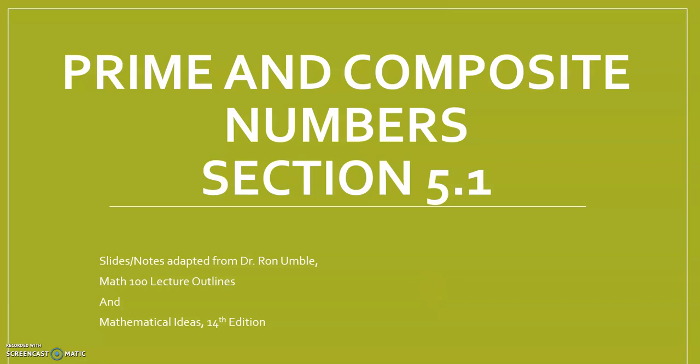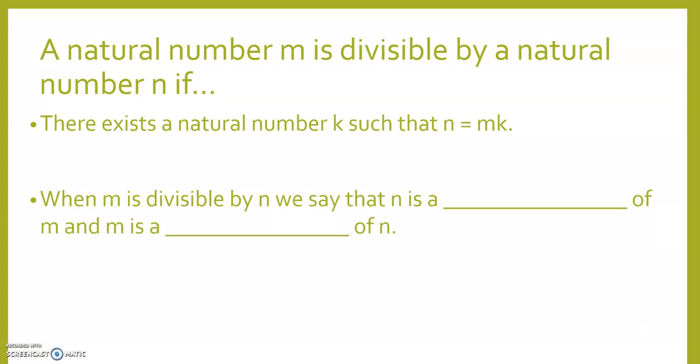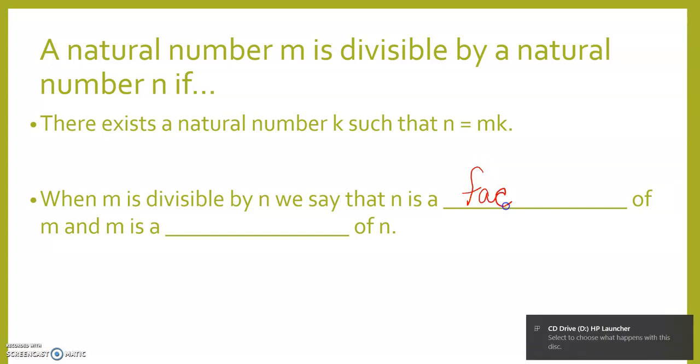Section 5.1 Prime and Composite Numbers. A natural number m is divisible by a natural number n if there exists a natural number k such that n equals m times k. When m is divisible by n, we say that n is a factor of m and m is a multiple of n.